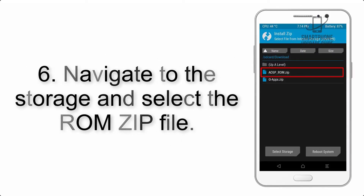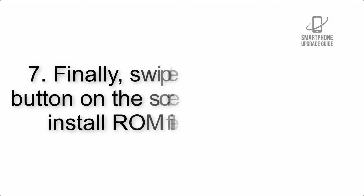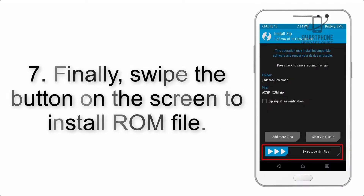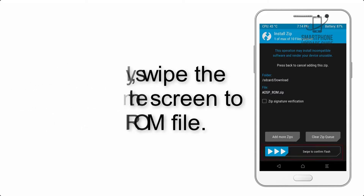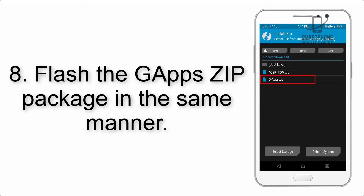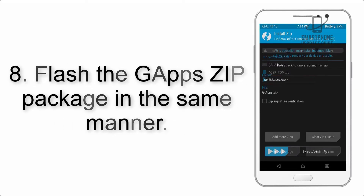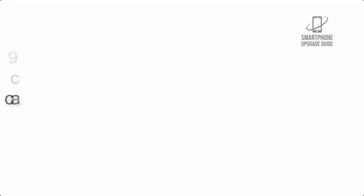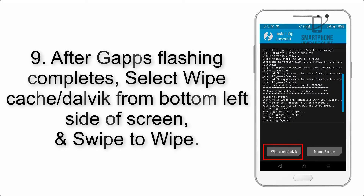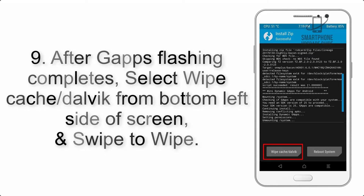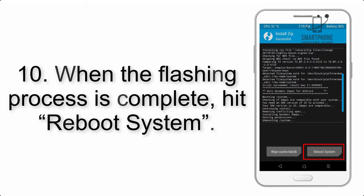Step 5: go back to the recovery main screen and tap on the Install button. Step 6: navigate to the storage and select the ROM zip file. Step 7: swipe the button on the screen to install the ROM file. Step 8: flash the GApps zip package in the same manner. Step 9: after GApps flashing completes, select Wipe Cache and Dalvik from the bottom left side of the screen and swipe to wipe.